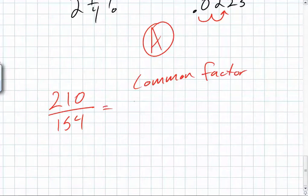What's half of two hundred and ten? One hundred and five. What's half of a hundred and fifty-four? What's half of a hundred and fifty? What's half of four? What's two plus seventy-five? Seventy-seven. Try again. Seventy-seven. So now you're still looking for a common factor.